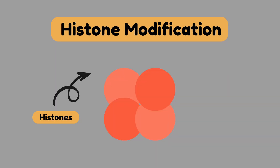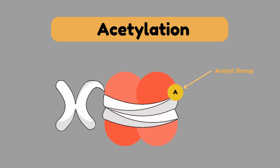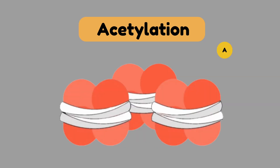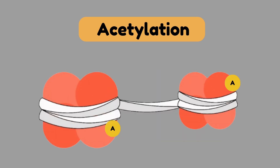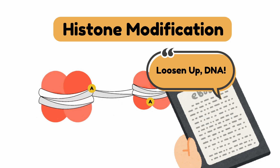Histone modification affects histones, which are proteins that the DNA wraps around. Chemical changes to histone proteins, such as acetylation, can influence how tightly DNA is wrapped around the histones. Tightly wound DNA is less accessible and cannot be read and expressed, while loosely wound DNA is accessible, allowing the gene to be expressed. Think of histones as the chefs holding the recipe book — they might decide to either tightly pack the DNA to keep it hidden, or loosen it to make it accessible.